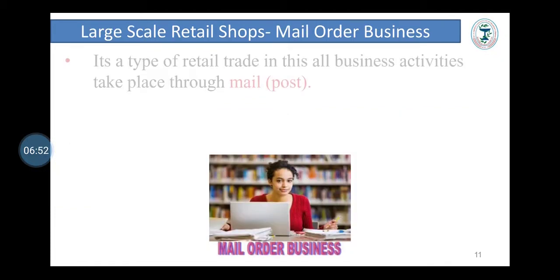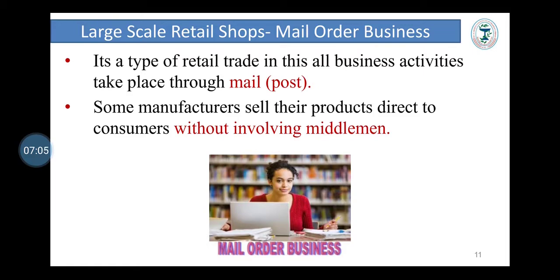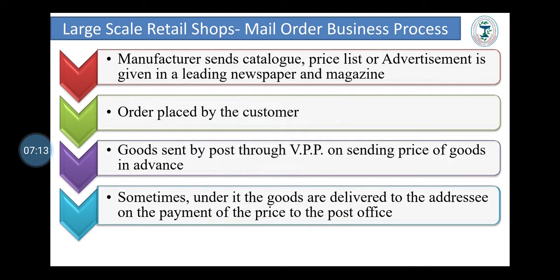The third type is mail order business. It is a type of retail trade in which all business activities take place through mail, i.e. post. The manufacturer sells products directly to customers without involving a middleman. The manufacturer approaches customers by sending catalogs, price lists, and circulars by post or through advertisements in newspapers or magazines. The customer places the order, and goods are sent by post through value payable post or collected on payment of price at the post office.